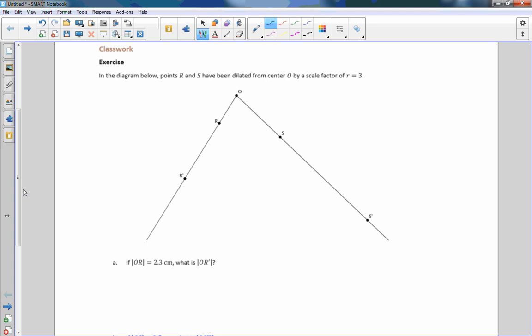And it says in the diagram below, point R and S, so where R is right here and S is right here, have been dilated from center O by a scale factor of R equals 3. So there's our scale factor. So in other words, if this is a length of 1, then O to R prime is 1 times 3 and so forth.